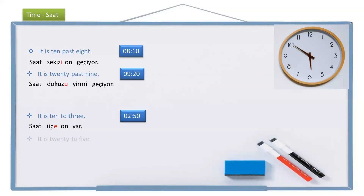Let's see one more example: it is 20 to 5. We are going to say there are 20 minutes to 5. So: saat, 5 — beş, with the dative suffix — beşe, 20 — yirmi, var. It is 20 to 5: saat beşe yirmi var.